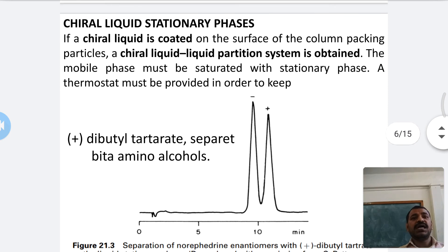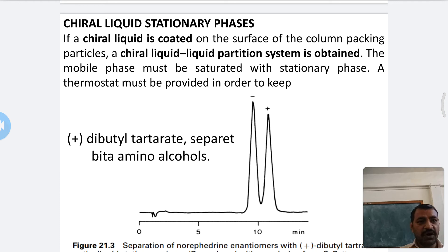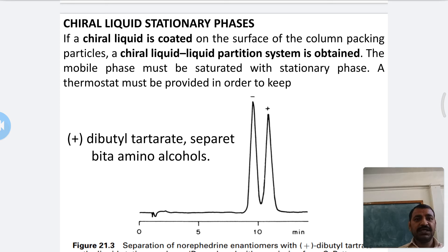Next is the chiral liquid stationary phase. In this approach, a chiral liquid is coated on the surface of the column packing particles — for example, on silica — and a chiral liquid-liquid partition system is obtained. Both the mobile and stationary phases are liquid, with the chiral liquid coated on the column packing.